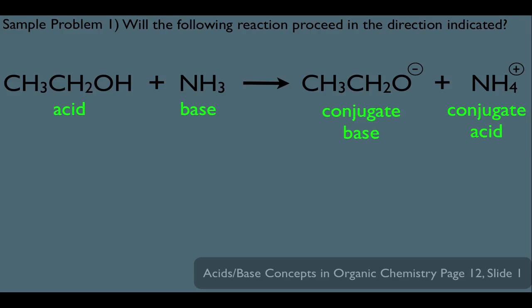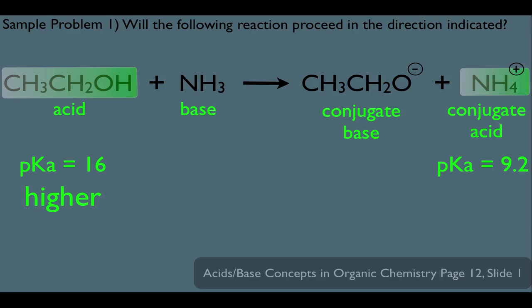Now that everything's labeled, what we compare is the acid on the reactant side and the conjugate acid on the product side. What are their relative pKa's? pKa's are constants we would look up in a textbook. The pKa for this acid happens to be 16, and the pKa for this acid happens to be 9.2. Notice our acid on the reactant side has a higher pKa, and our conjugate acid on the product side has a lower pKa. We know reactions go from low to high pKa. Therefore, this reaction will not proceed in the direction as indicated.